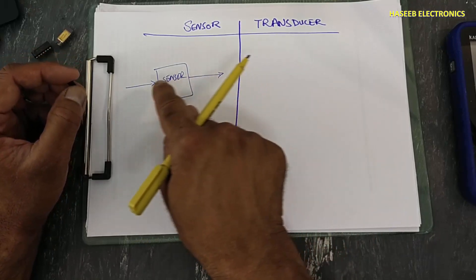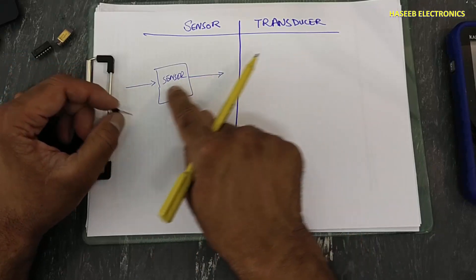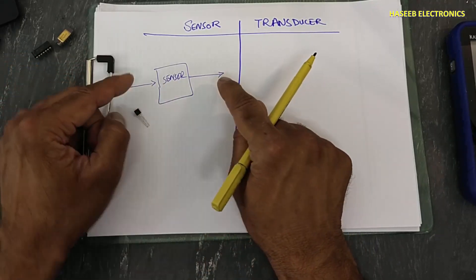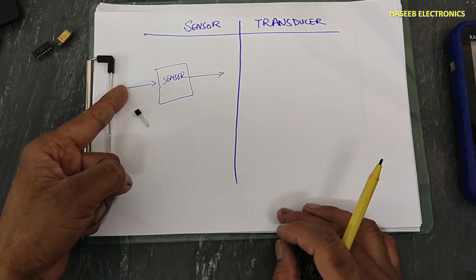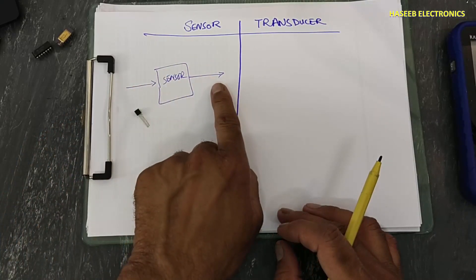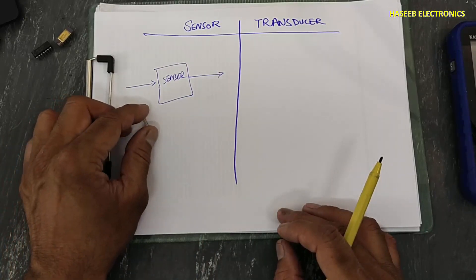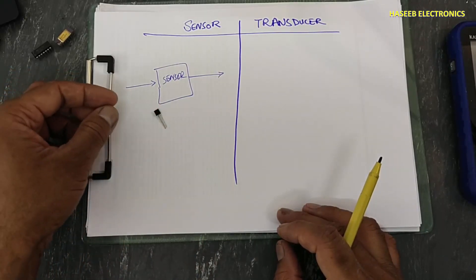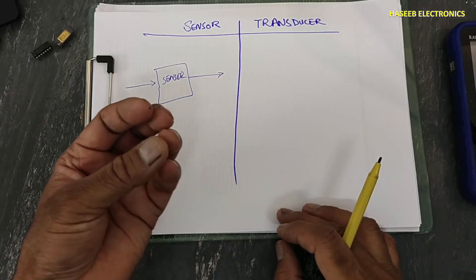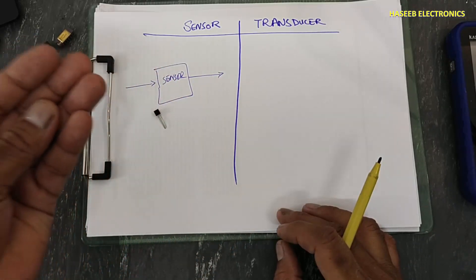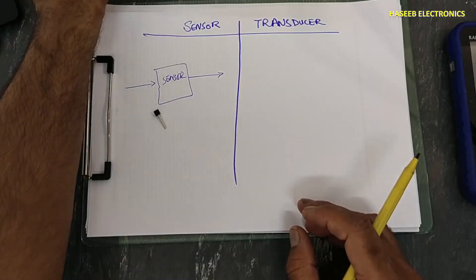If it is Hall effect sensor, it will sense the magnetic lines of forces and produce relative electrical signal. If you are using LDR, light dependent resistor, it will receive the photo energy and provide relative electrical signal. If we have pressure sensor, it will sense the pressure and provide relative electrical voltage.